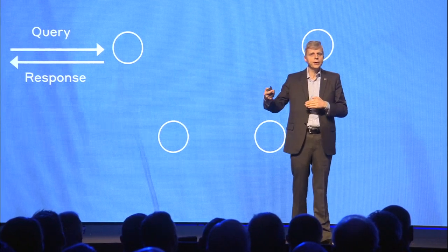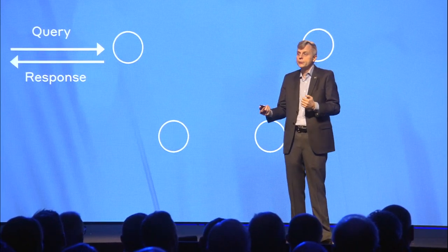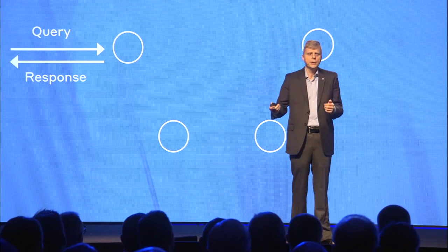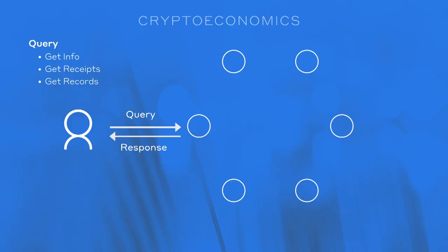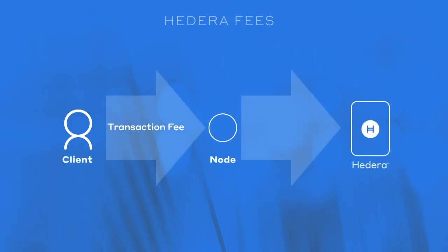Queries and transactions are a little bit different in what resources they're using. Are we having to gossip it? Are we having to check digital signatures? Does everyone have to check a digital signature? Does everyone have to do consensus on it? Transactions take a little bit more of our resources than queries do. So we should reflect that in the crypto economics. When you do a transaction, you pay a transaction fee, and you send it to some random node, then they send it to everybody else. The node takes some of that, and the network as a whole gets some of that.